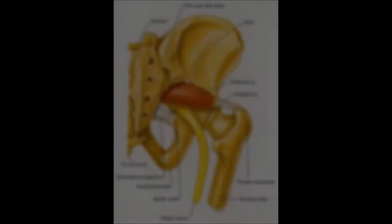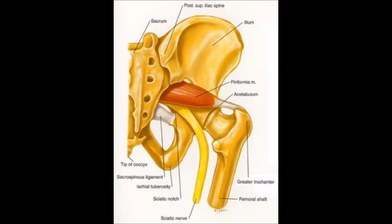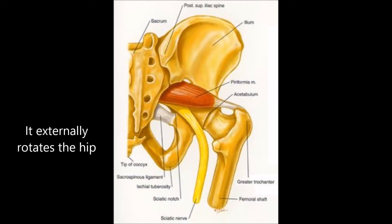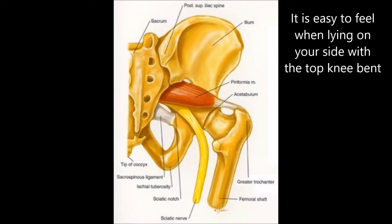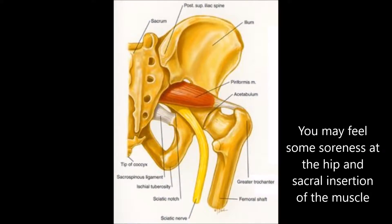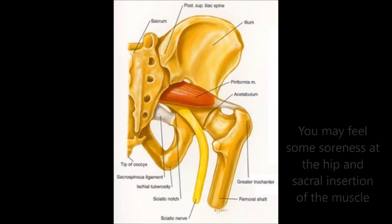Let's take a quick look at the anatomy of the piriformis muscle. As you can see, the piriformis muscle attaches to the hip — the hip joint, so the femur head — and then comes across and attaches into the sacrum. The purpose of that muscle is that as it tightens, it helps to rotate and move the hip.